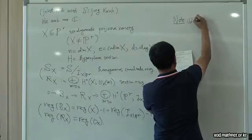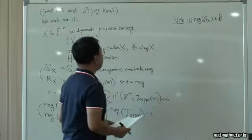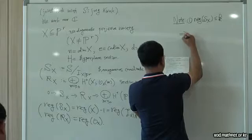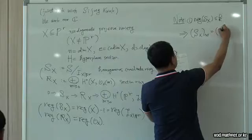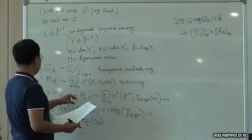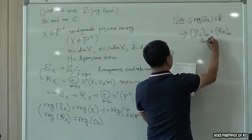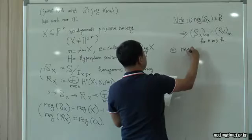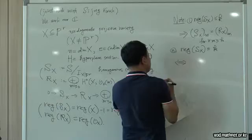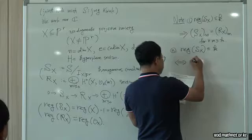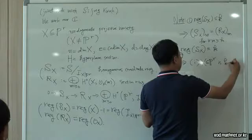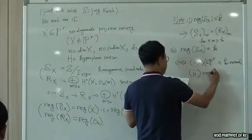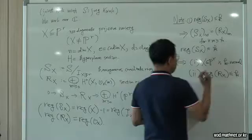I'll give a quick property of the regularity. If the regularity of the homogeneous coordinate ring is less than or equal to K, that means the higher graded pieces of these two rings coincide. One can also check that the regularity of the homogeneous coordinate ring is less than or equal to K if and only if X is K-normal.